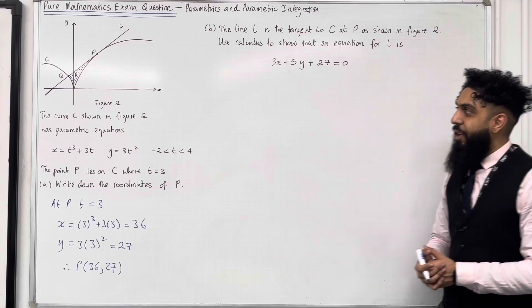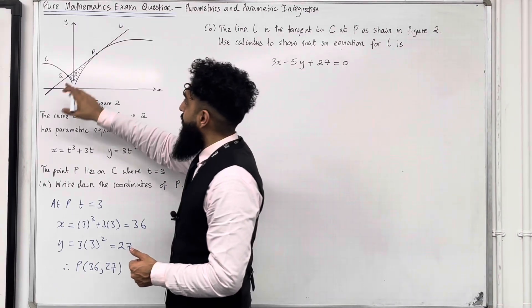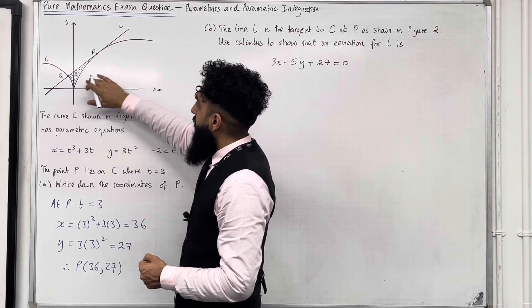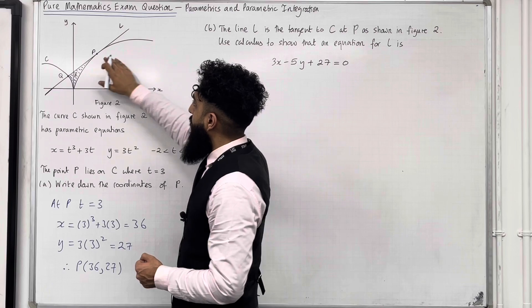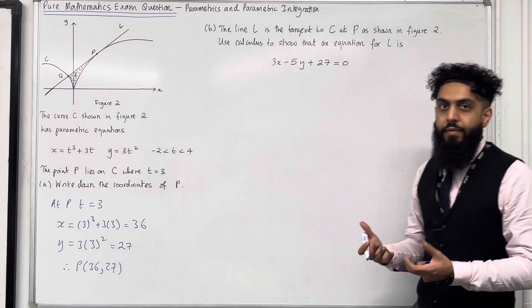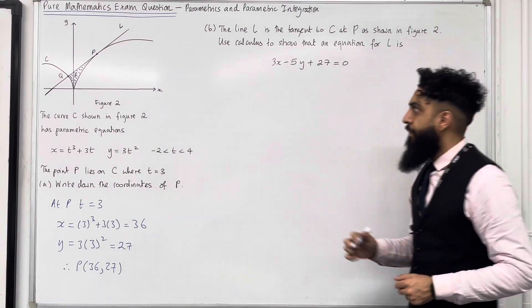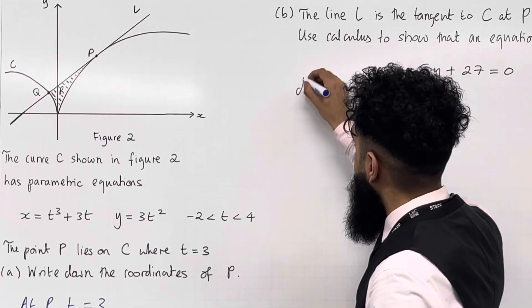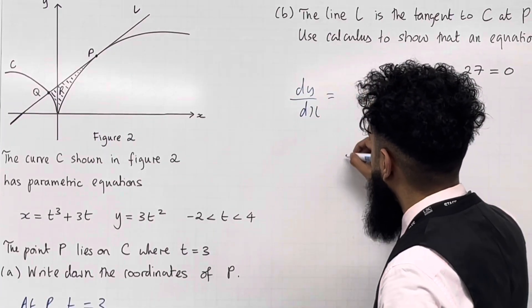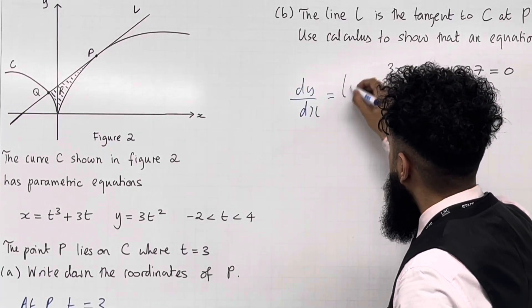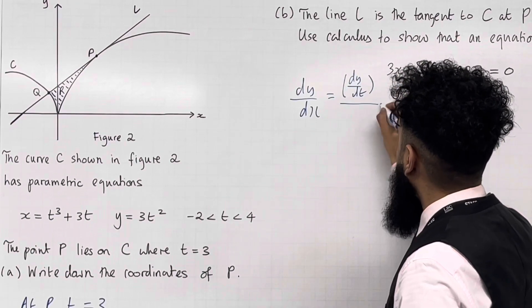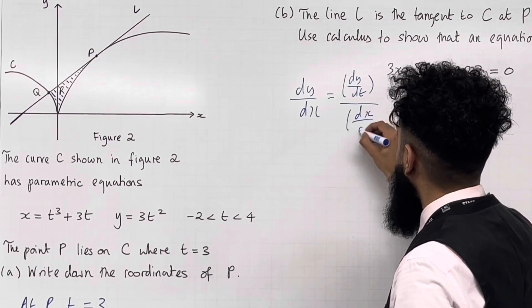The gradient of the tangent L at point P equals the gradient of the curve at point P. So we need to differentiate the curve to find the gradient function. We must apply parametric differentiation: dy/dx is given by (dy/dt) divided by (dx/dt).